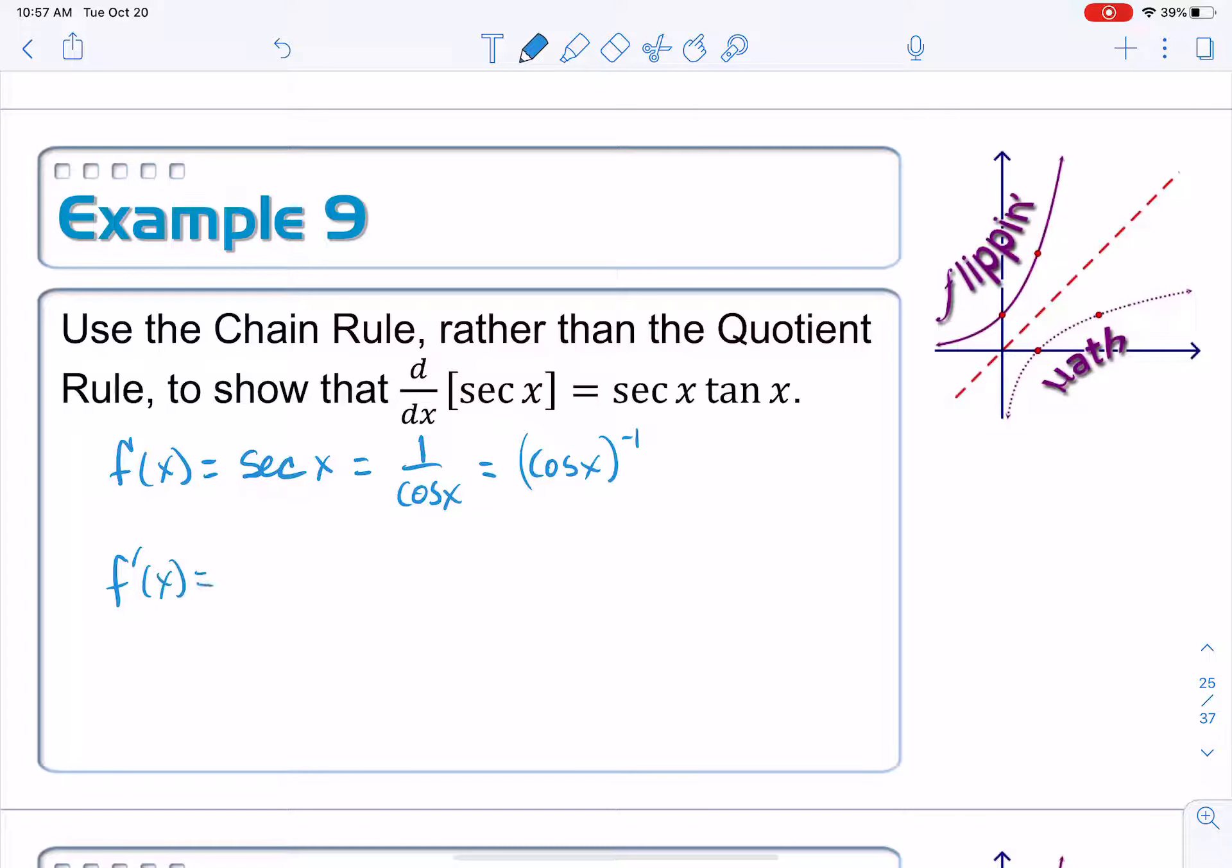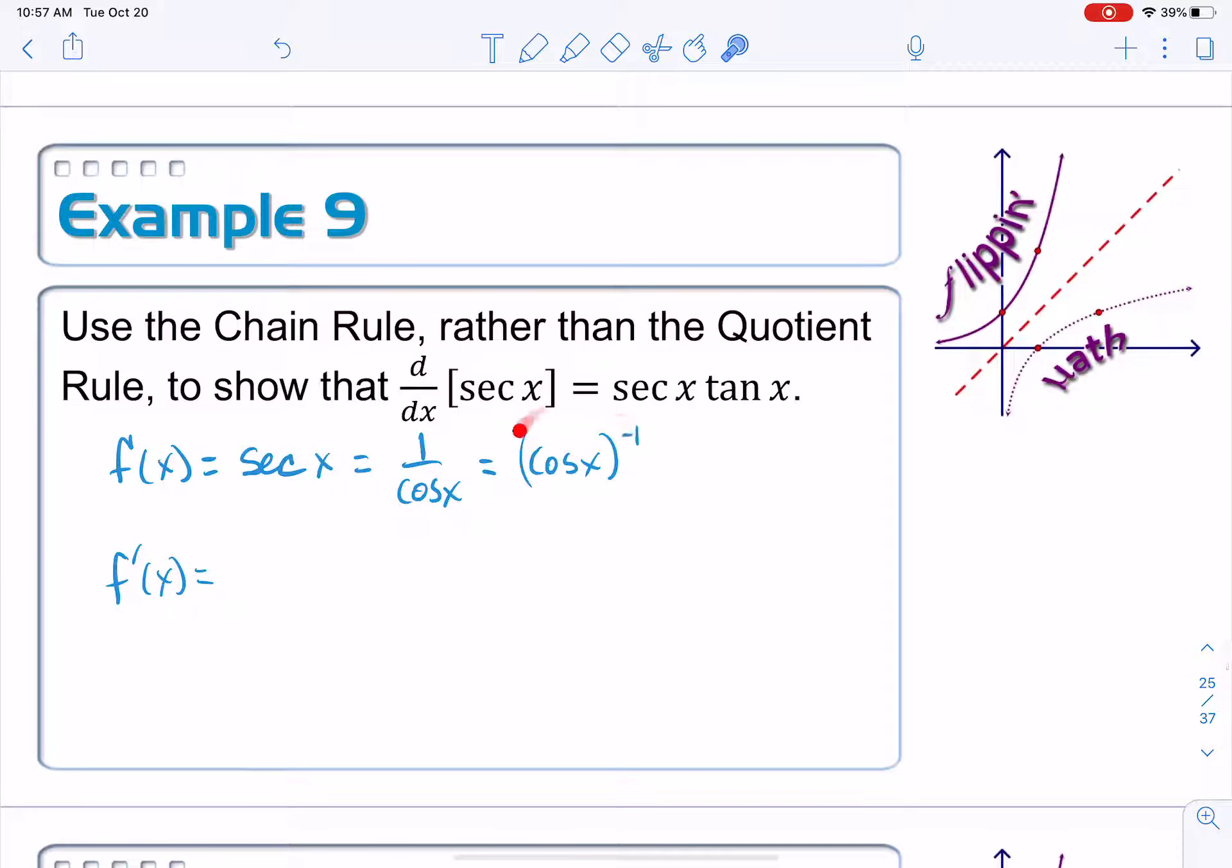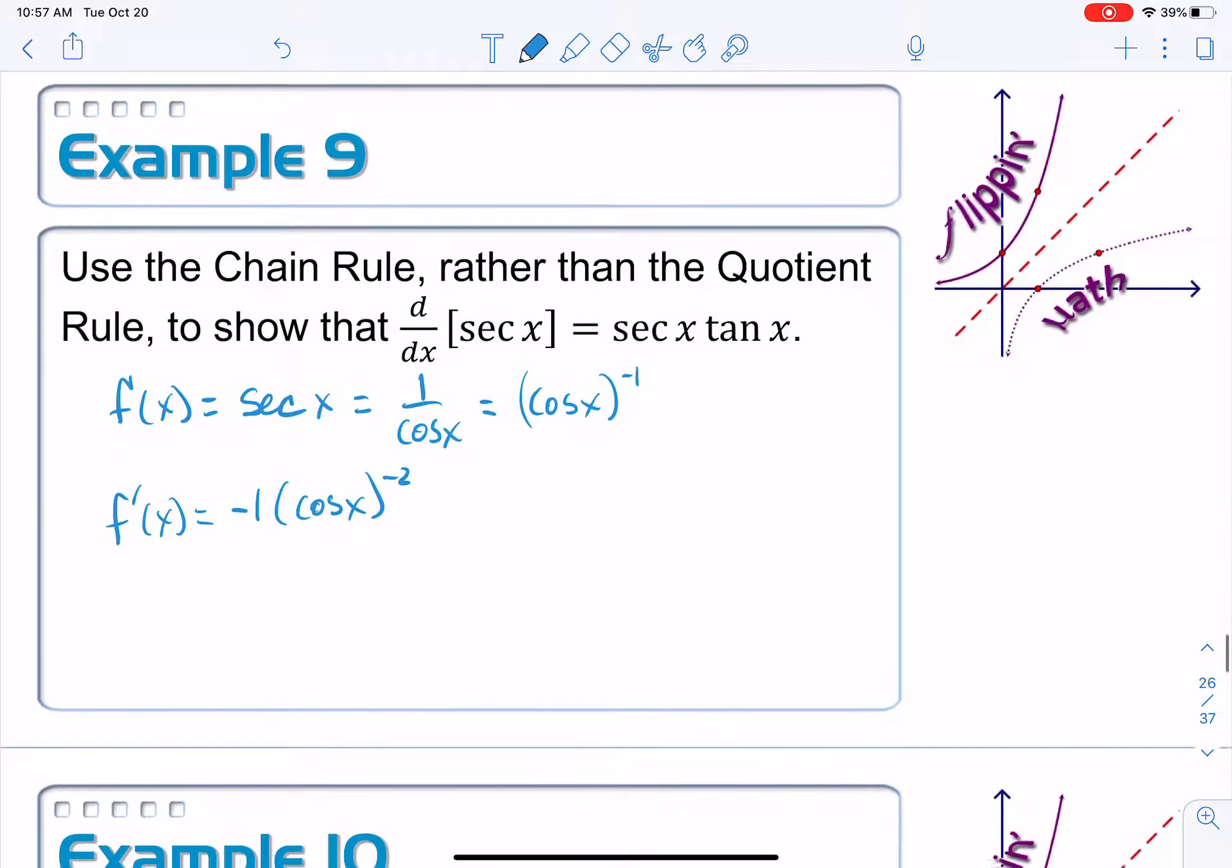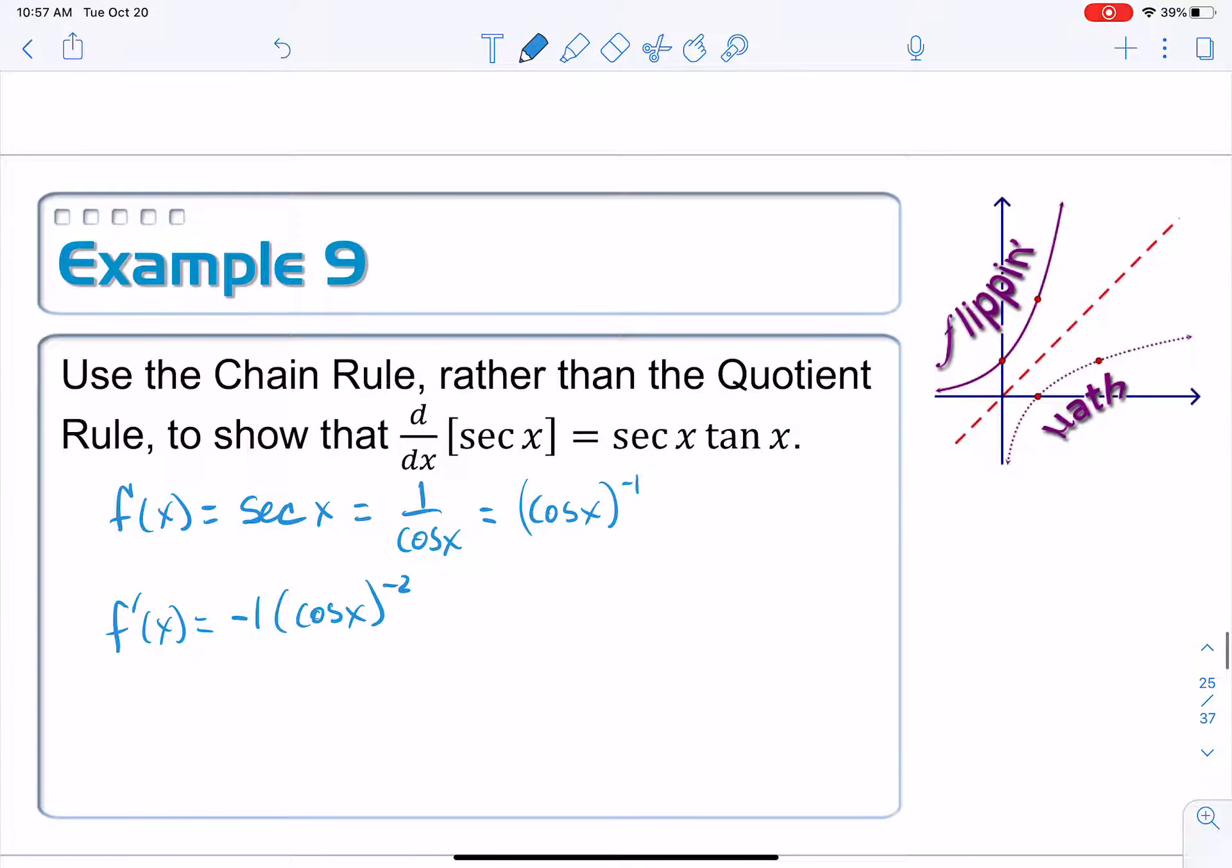All right. We are ready to take its derivative. f prime of x is equal to leapfrog this power down and then subtract 1 from that power. So negative 1 times cosine x to the negative 2 power. And then we have to multiply it times the derivative of the interior function. Derivative of cosine is negative sine.